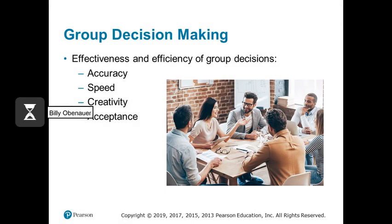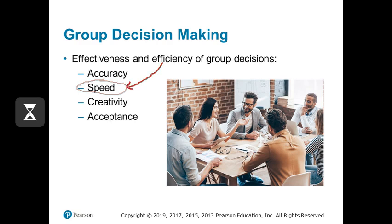How do we evaluate group decision making in terms of effectiveness and efficiency? Groups tend to be more accurate than individuals because of the information and perspectives they bring, though they can be less accurate than the most accurate individual member. Groups tend to take more time than individuals to make decisions, so they may be less efficient. In terms of creativity, there is very little debate — groups are generally considered more creative than individuals. Decisions made by groups are also accepted at a higher rate than those made by individuals.